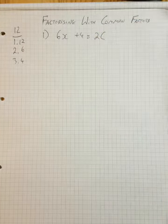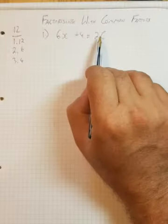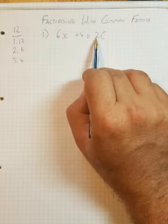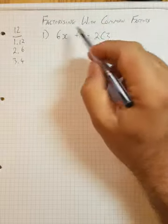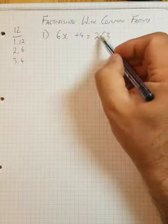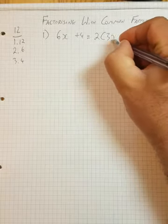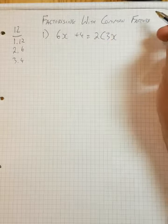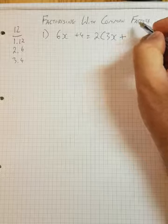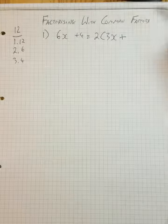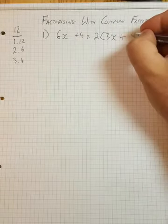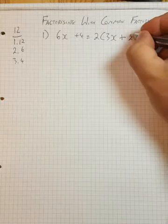So our brackets represent multiplication. Well, what number multiplied by 2 would give me 6? It's 3. Or another way to look at it is, well, what's 6x divided by 2? Now remember, it's 6x, so it's going to be 3x. 2 times 3x is 6x. Plus, where is this plus coming from? It's coming from here in front of the 4. What is 4 divided by 2? 2. So my factors...